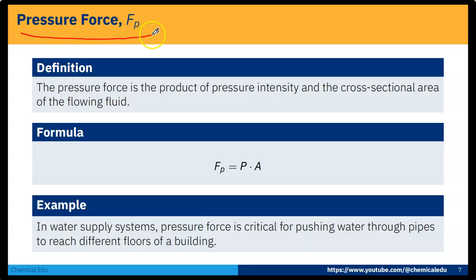Now next one is pressure force Fp. The pressure force is the product of pressure intensity and cross-sectional area of the flowing fluid. Here is the formula: Fp is P into A. P is the pressure intensity and A is the area.